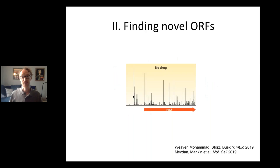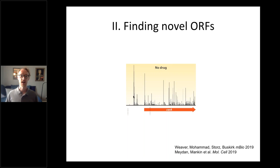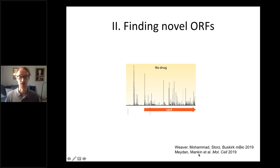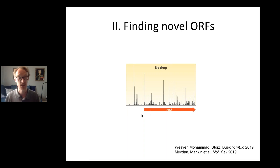Moving to a slightly different topic: ribosome profiling is a wonderful tool for annotating genomes. In bacteria, there are lots of small open reading frames, typically fewer than 50 codons, which are not called by automated annotation engines because they're too short — but many of these things are expressed and doing biology. In the last few years, my lab working with Gigi Storz and Shura Mankin's lab have used ribosome profiling to identify small open reading frames in E. coli K12, reporting 40 new ORFs and verifying that they really are being expressed. For example, we have the gene cspA with ribosome footprints on it, but there are also footprints upstream — so the question is, what open reading frame is leading to that synthesis?